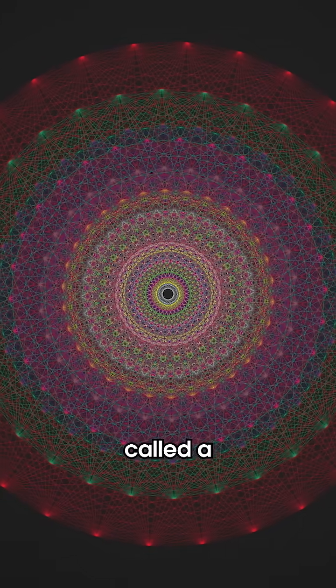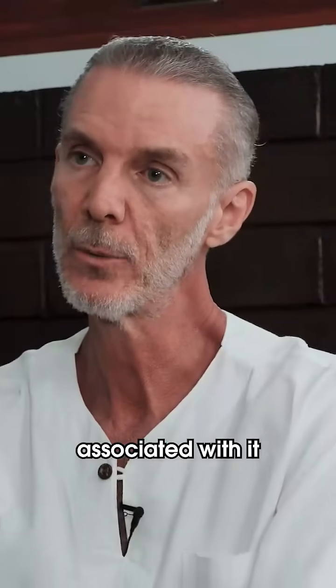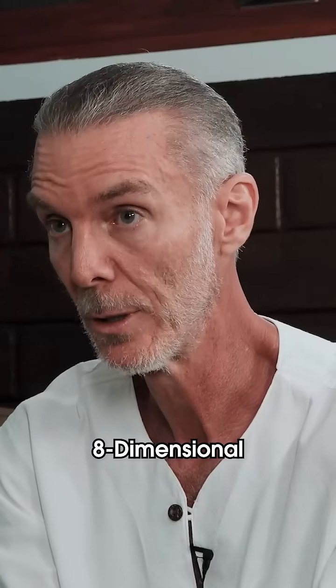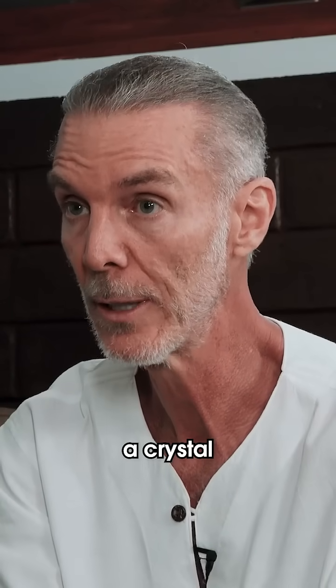E8 is an algebra called a Lie algebra. It has a geometric object associated with it called the E8 algebraic root lattice, and that's an eight-dimensional object. You can call it a crystal if you want.